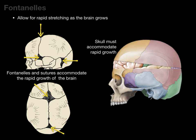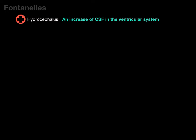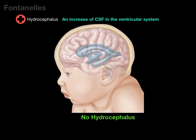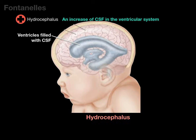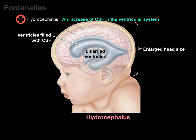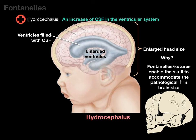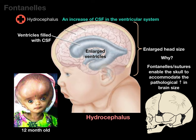The fontanelles and sutures accommodate the rapid growth of the brain, but also accommodate conditions such as hydrocephalus — an increase of cerebrospinal fluid in the ventricular system. Here we see an infant without hydrocephalus, and then with hydrocephalus, where the ventricles are overfilled with CSF, causing the ventricles and the entire head to become enlarged. The fontanelles and sutures enable the skull to accommodate that pathological increase, as seen in this 12-month-old with hydrocephalus. In adults, increased intracranial pressure causes coma because all sutures and fontanelles are ossified.